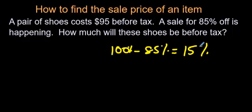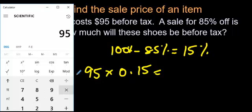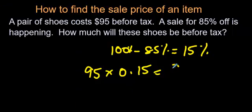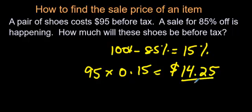So 95 times 0.15, because we've changed 15% to a decimal, you're going to get 95 times 0.15. And just like that, it's $14.25, which is the exact same price we got in the last video doing it the longer method.